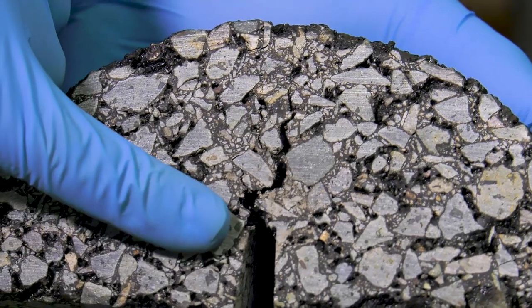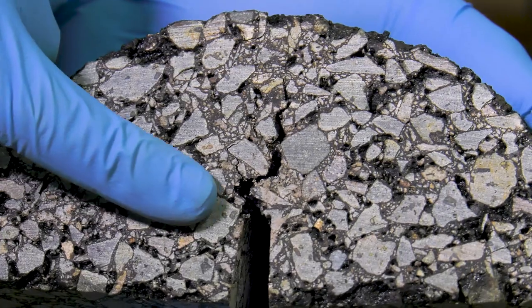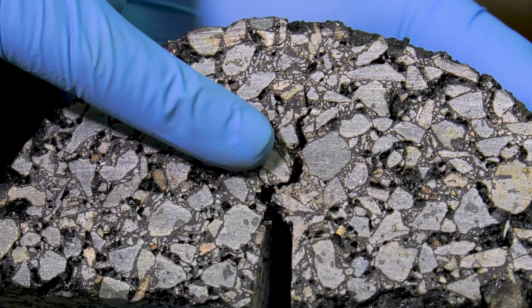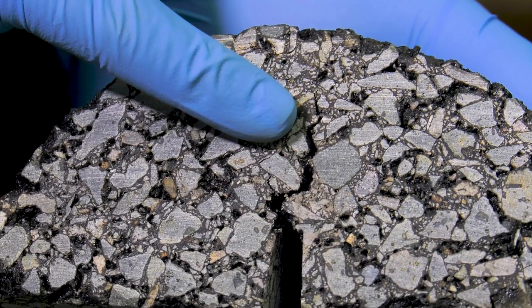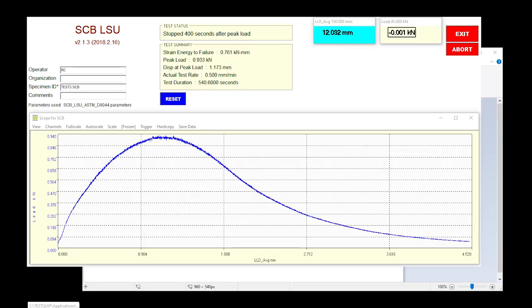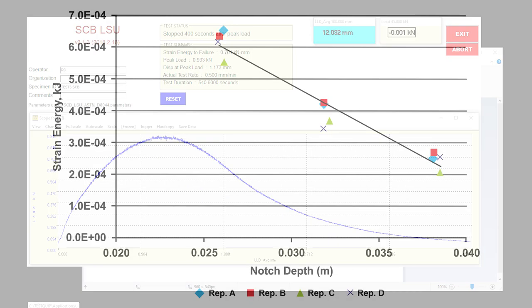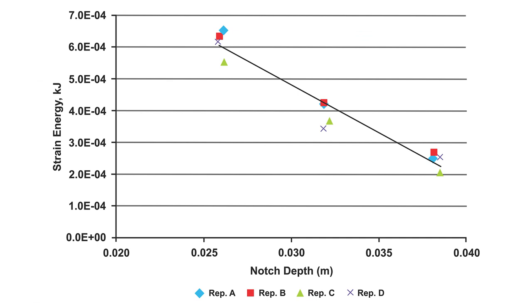The load and vertical deformation relationship at each notch depth is recorded. Analyze the test data and calculate the strain energy for each test specimen at each notch depth. Compute the critical strain energy rate as described in the standard. This engineering property is a cracking performance indicator of the asphalt mixture at intermediate temperature.